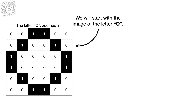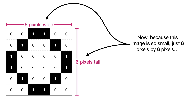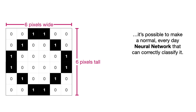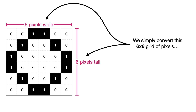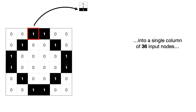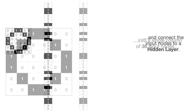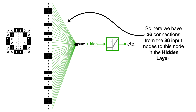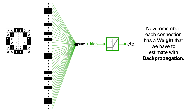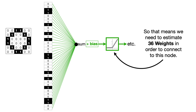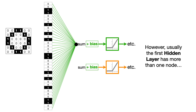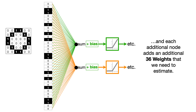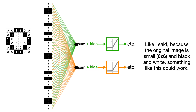We will start with the image of the letter O. Because this image is so small — just 6 pixels by 6 pixels — it is possible to make a normal, everyday neural network that can correctly classify it. We simply convert this 6 by 6 grid of pixels into a single column of 36 input nodes and connect the input nodes to a hidden layer. So here we have 36 connections from the 36 input nodes to this node in the hidden layer, and each connection has a weight that we have to estimate with backpropagation. So that means we need to estimate 36 weights to connect to this node.